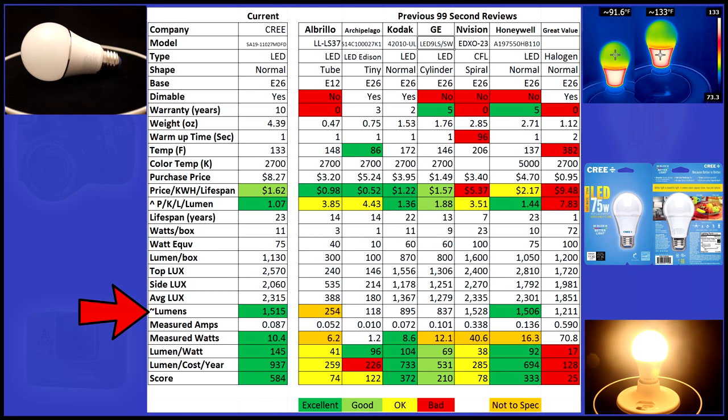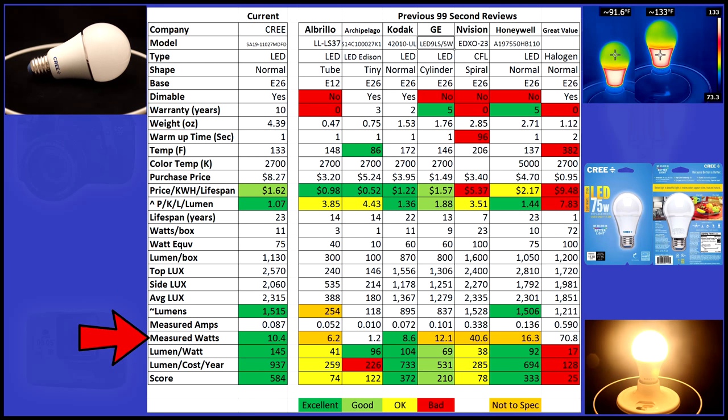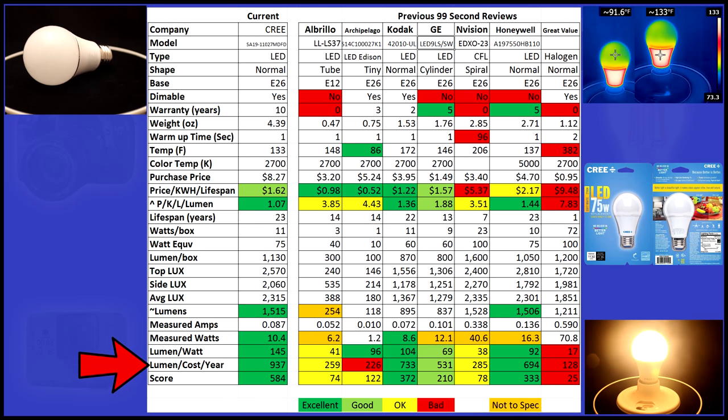I will point out that seldom does an LED outperform its manufacturer specs, but this Cree LED produced 385 extra lumens at half a watt less than advertised. This is what allowed it to hit a 145 lumen to watt ratio, which is the highest I've ever seen in a consumer grade bulb.